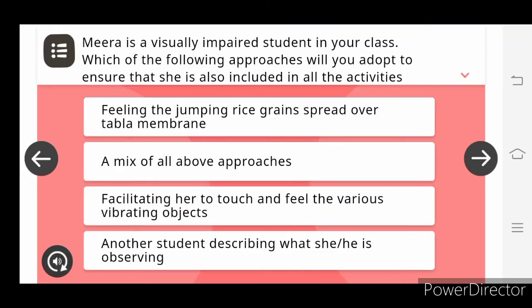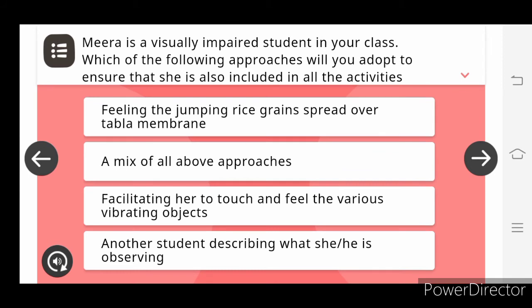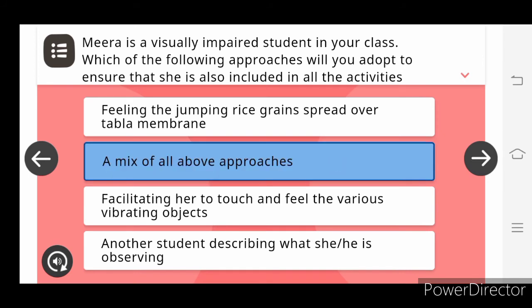The next question we have: Mira is a visually impaired student in your class. Which of the following approaches will you adopt to ensure that she is also included in all activities being done? Answer is a mix of all above approaches, including feeling, peeling the jumping rice grain, separate over the tabla membranes, facilitating her to touch and feel the various vibrating objects, and other students describing what she is observing.